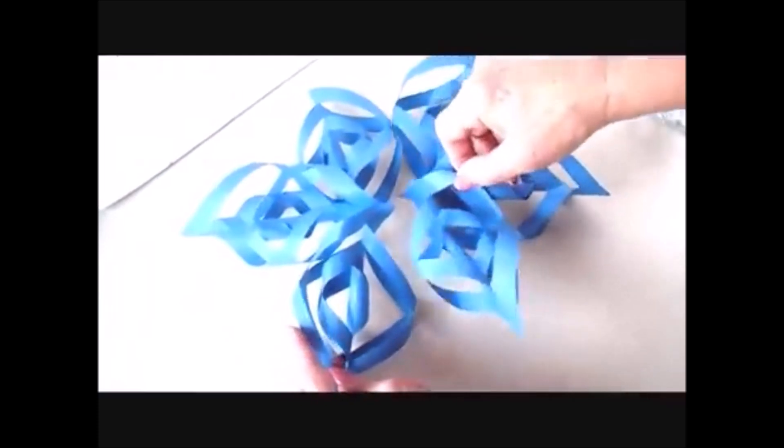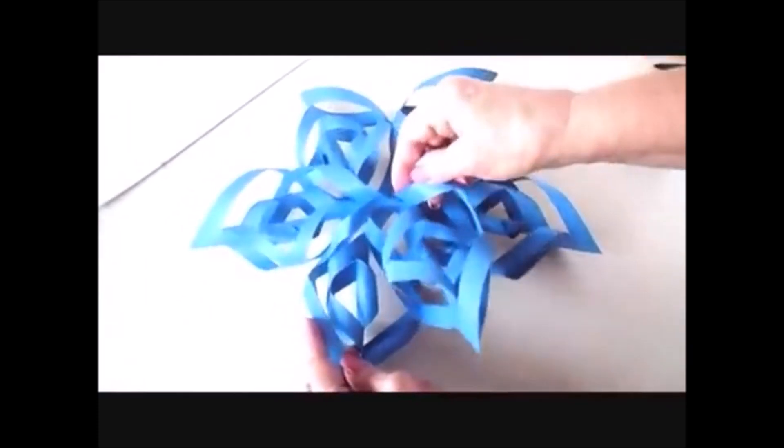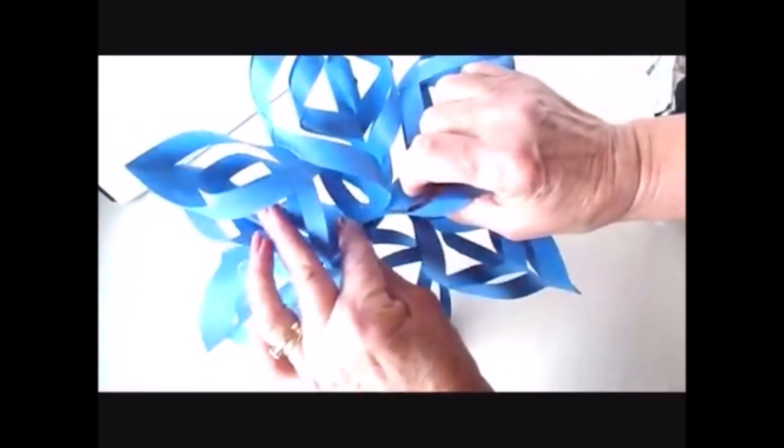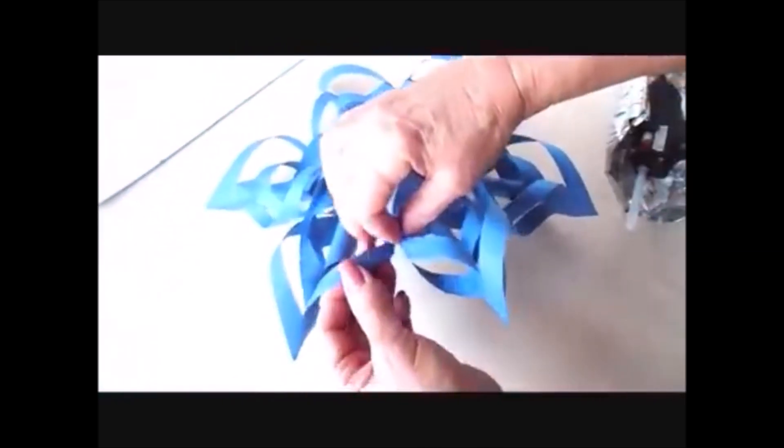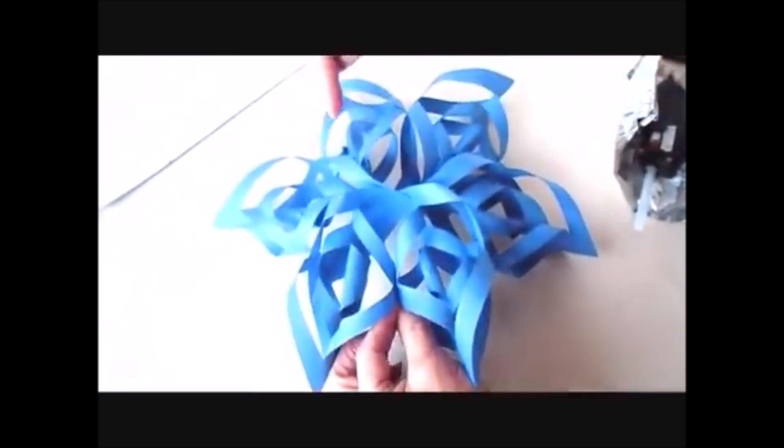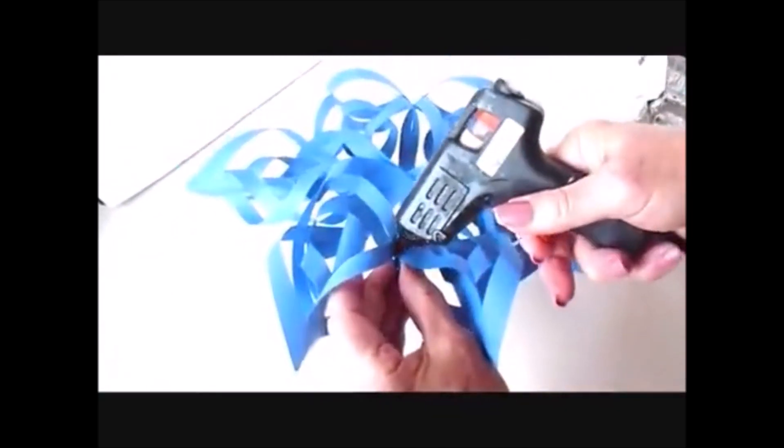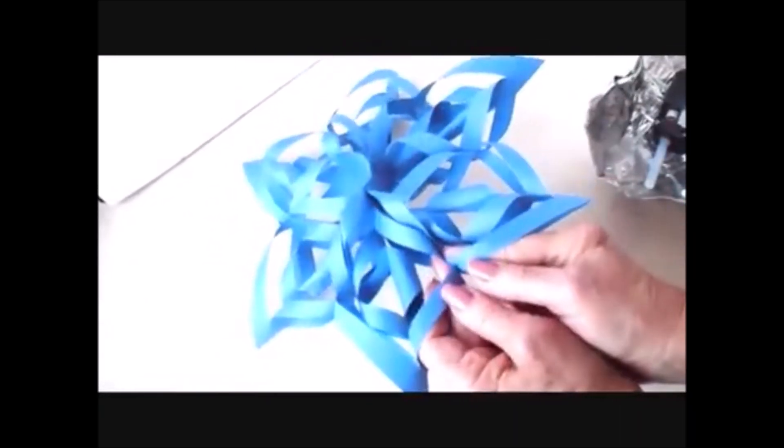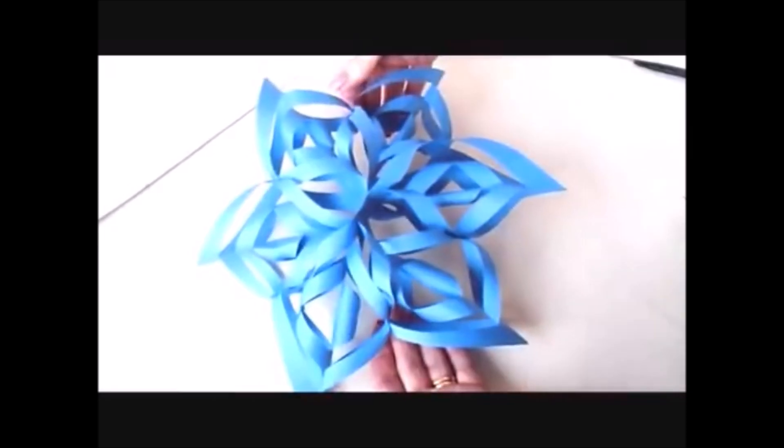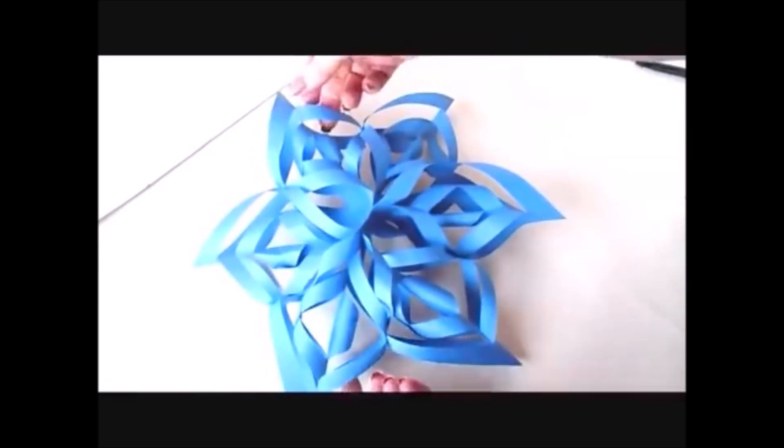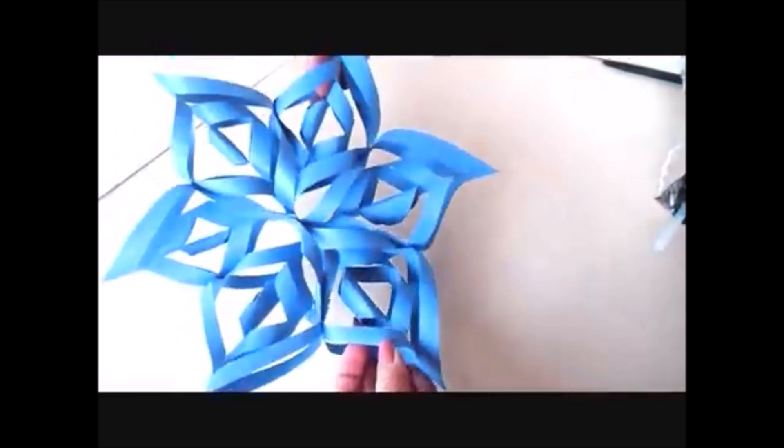Now I'm going to bring these two together in the center like that. And now wherever they meet all along the sides, I'm going to put some glue and attach them together. And there you go. You'll have a lovely dimensional star or snowflake for Christmas.